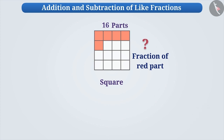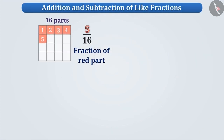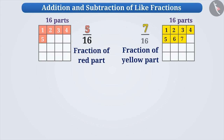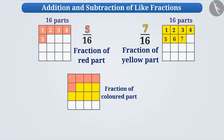Absolutely correct. Since five out of sixteen parts are painted red, the fraction of red part in the whole square is five by sixteen. Similarly, out of sixteen parts, if we fill yellow colour in seven parts, then the fraction of yellow part in the whole square is seven by sixteen. Now, can you tell me the fraction of the coloured part in the whole square?